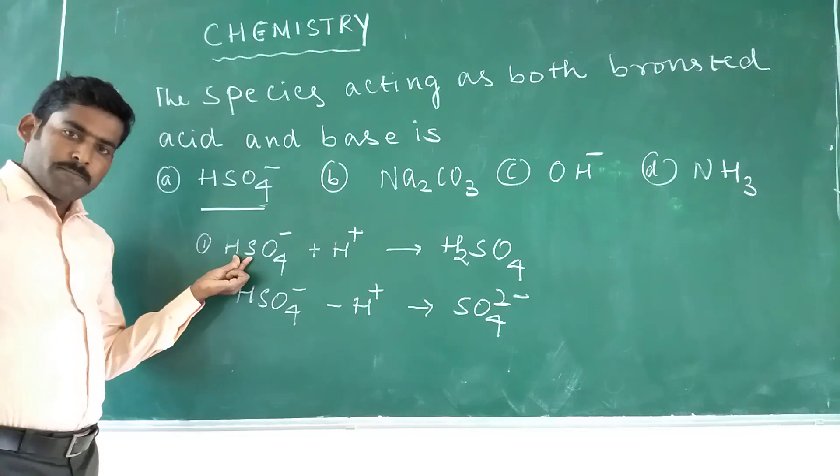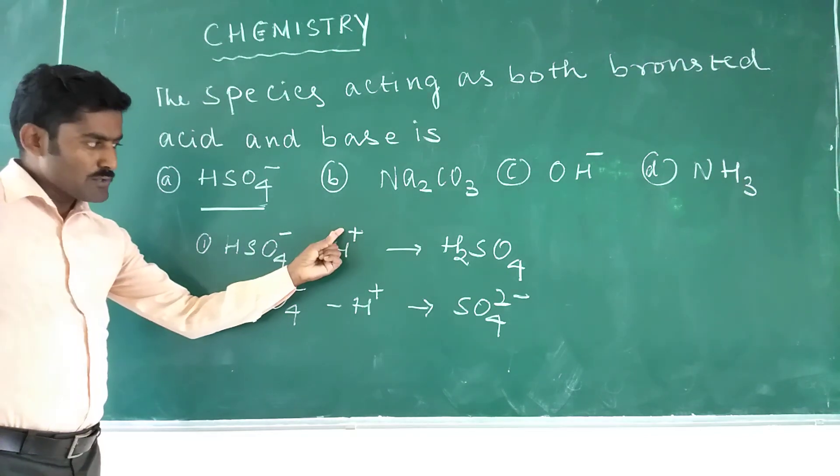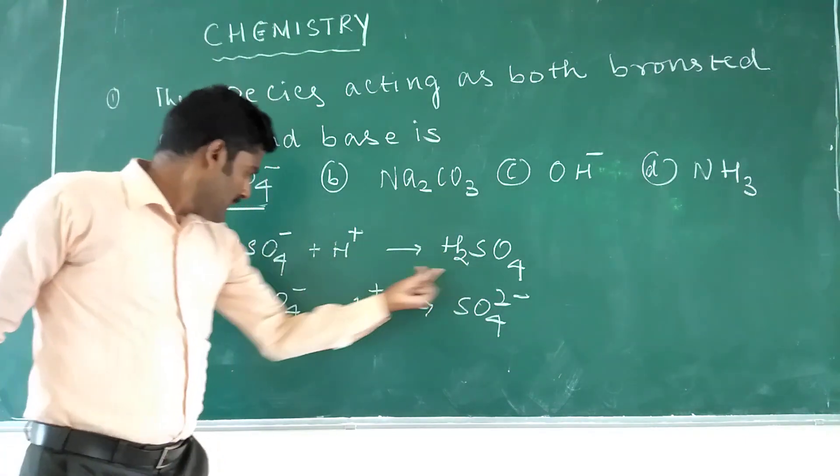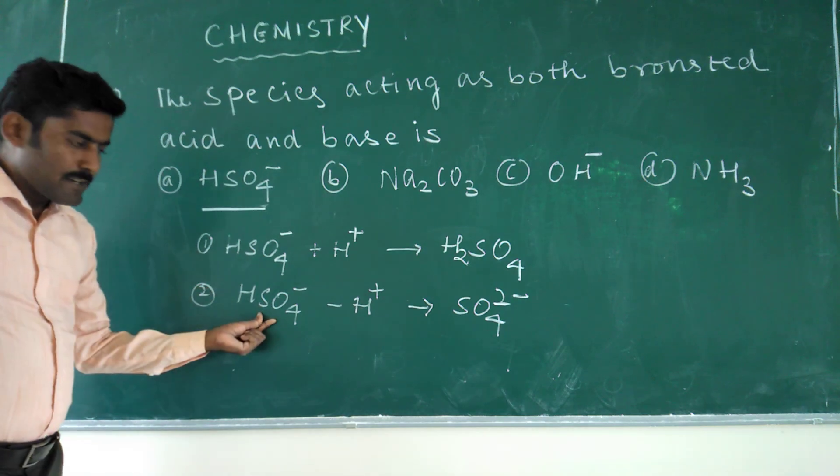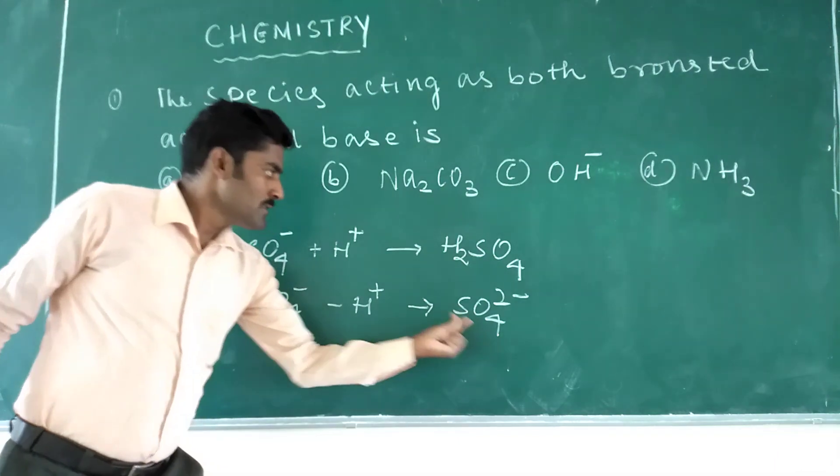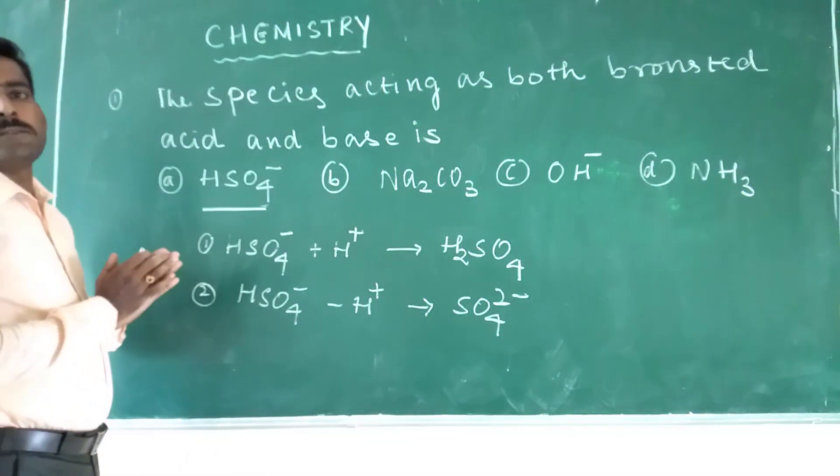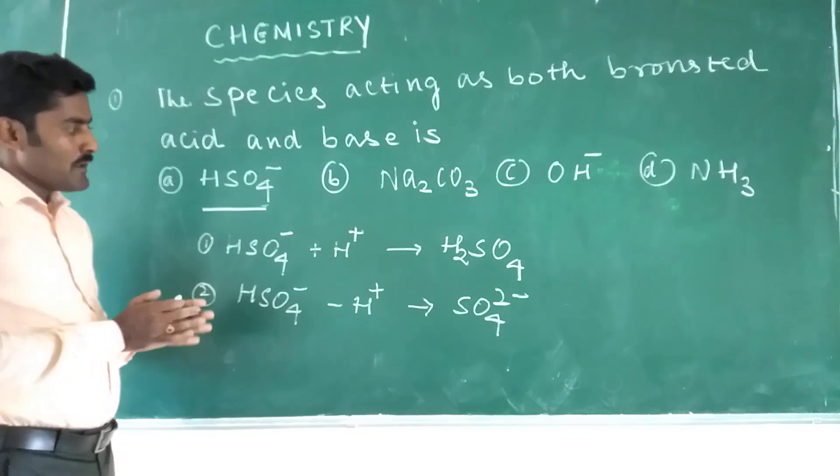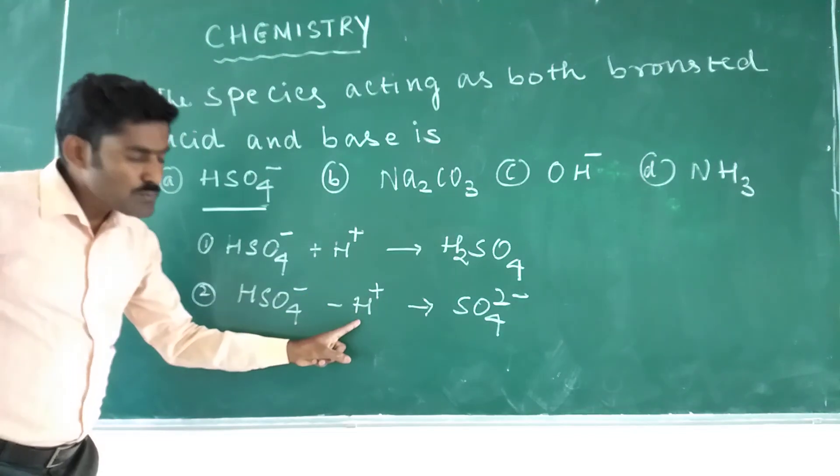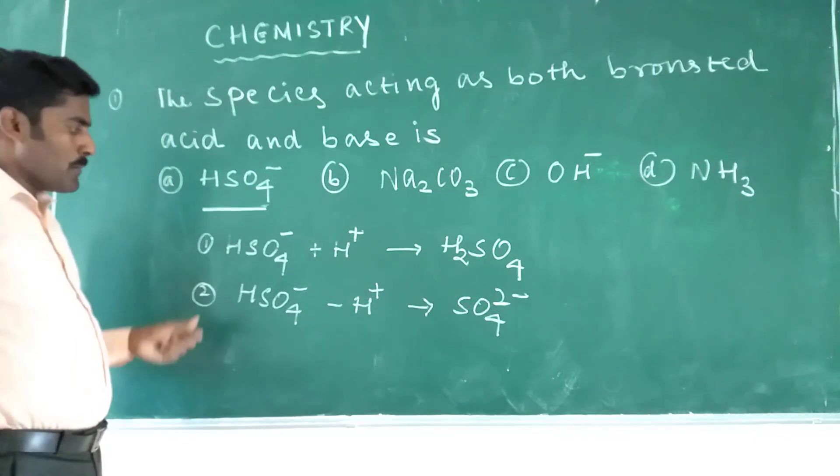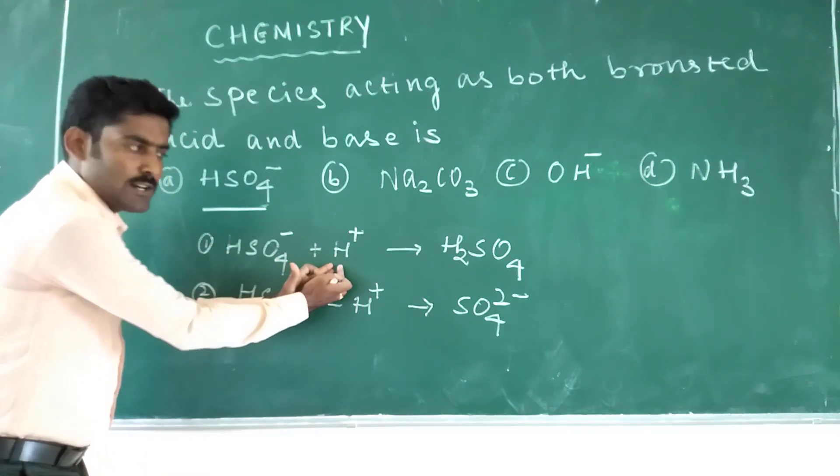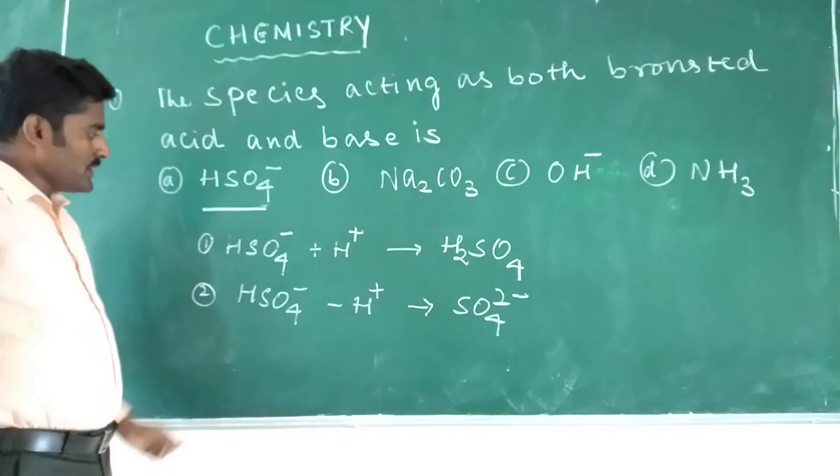So in step 1, hydrogen sulfate ion gains one proton. Hydrogen ion is also known as proton to form H2SO4. And in step 2, hydrogen sulfate ion loses one proton to form sulfate ion. Now, so first of all we should know what is meant by Bronsted Acid and Bronsted Base. Bronsted Acid is nothing but the substance which loses one proton to other substance. Bronsted Base is nothing but the substance which gains one proton from another substance.